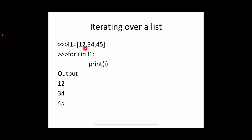For iterating over a list, using 'for i in l1': each item from the list is assigned to variable i one at a time. In the first iteration, i is assigned 12 and that value is printed; in the second, i is 34; in the third, i is 45. The loop repeats as long as items remain, and exits once all items have been processed.